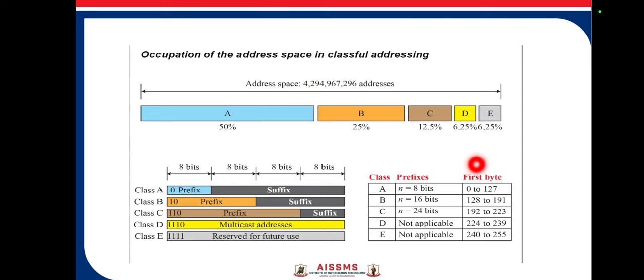For class A, 50% of the address space is reserved. For class B, 25%. Class C has 12.5%, class D has 6.25%, and class E also has 6.25%.